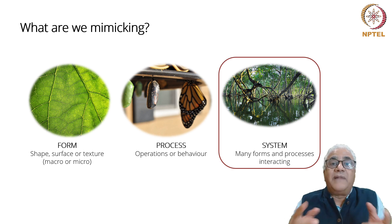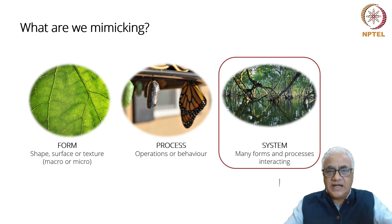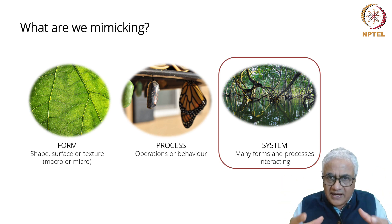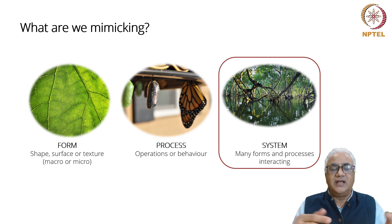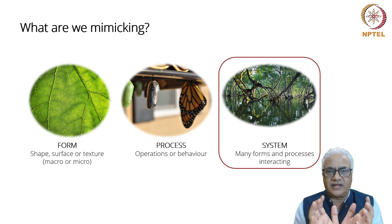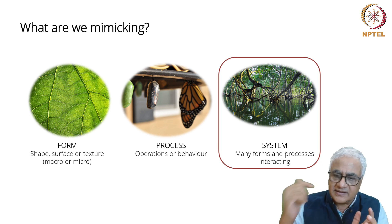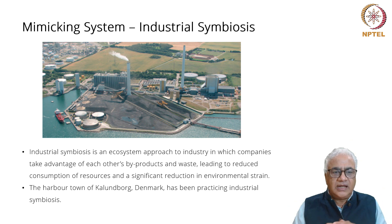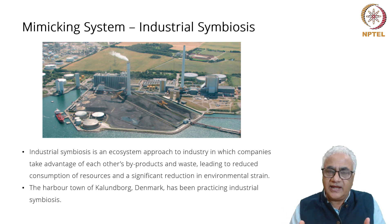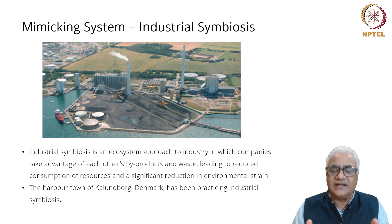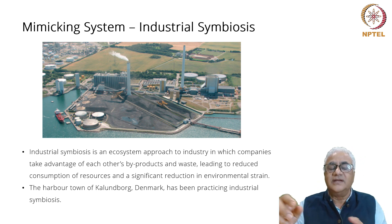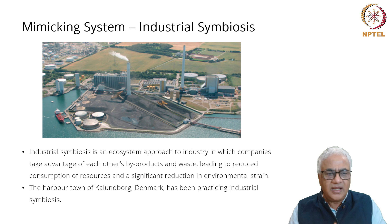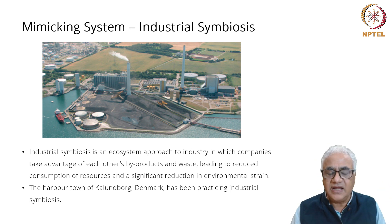For instance, a mangrove forest is completely connected — fish, plants, and many elements depend on each other. It's a complete system. The example for mimicking a system is industrial symbiosis: an ecosystem approach to industry where one industry uses the waste of another industry as its resource, its raw material. Just like the mangrove forest, every one of those industries depends on each other for their raw material. It's a brilliant example of imitating a system.